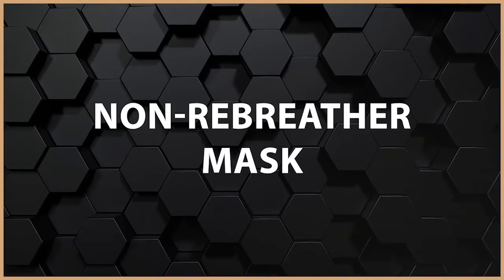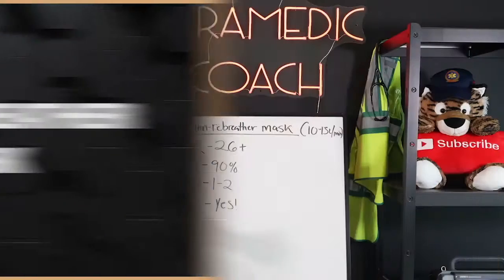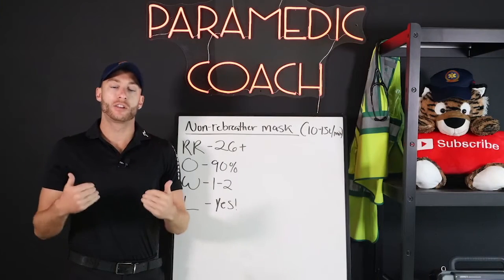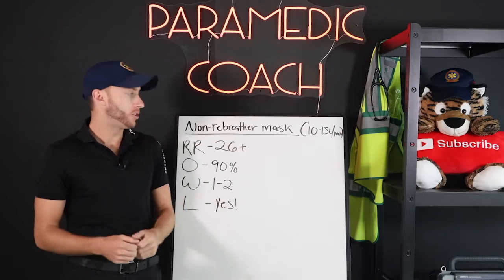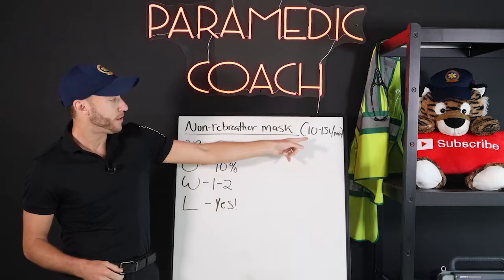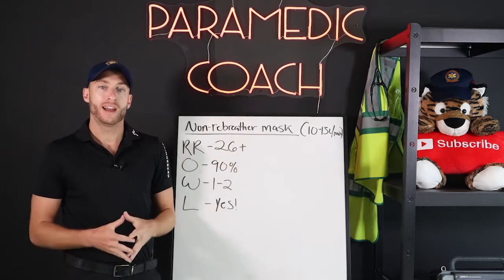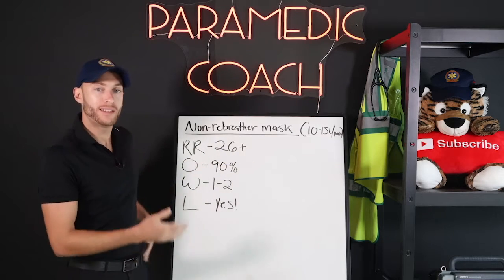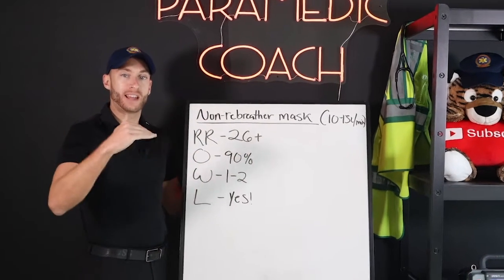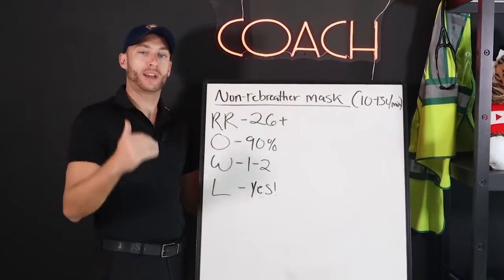So now let's look at the non-rebreather mask. Obviously, it's going to deliver more oxygen — about 10 to 15 liters per minute to the patient. This is, again, a step up for a more severe case.